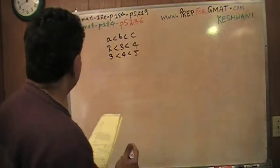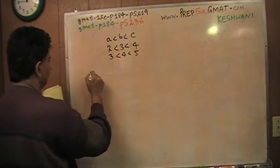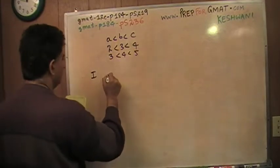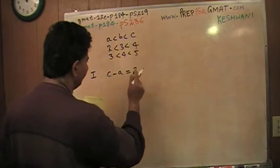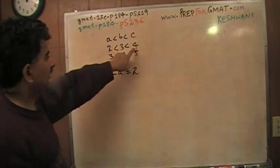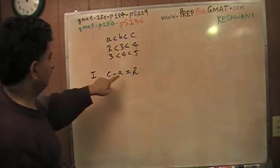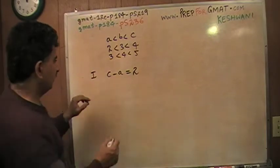First statement says, the difference between C and A equals 2. Does it? Well, let's take a look. If we do 2, 3, 4, C minus A is 2 actually. 4 minus 2 is 2. And if you start 3, 4, 5, 5 minus 3 is 2. So that works.